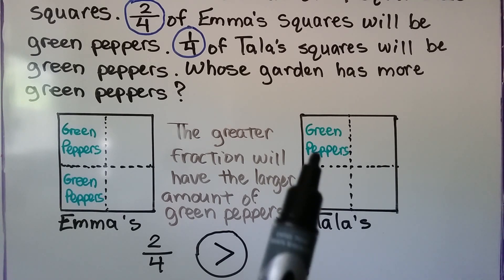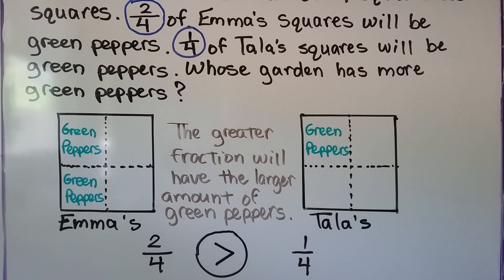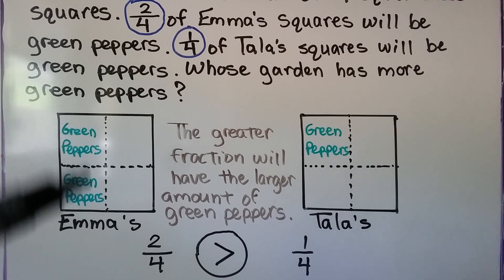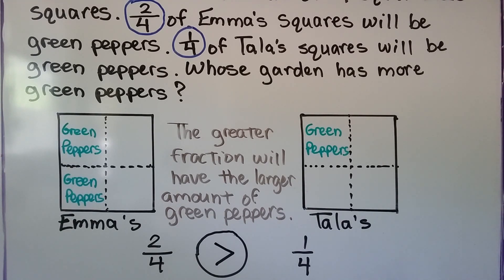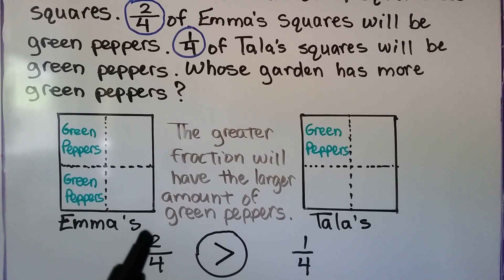Tala has 1 of the 4 squares, so that's 1 fourth. And 2 fourths is greater than 1 fourth — we can see she's got more green peppers planted. Because the denominators are the same, the numerator 2 is greater than 1, so 2 fourths is greater than 1 fourth.